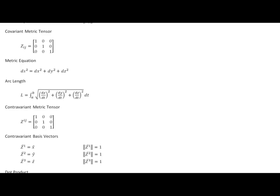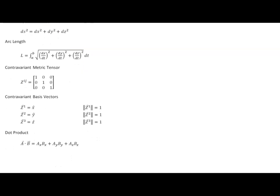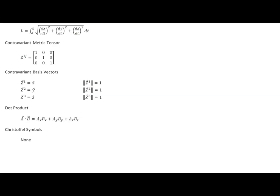On the fact sheet, you can see that the covariant metric tensor is made up only of constants. Therefore, we can simply record the Christoffel symbols as being non-existent — they're all equal to zero.